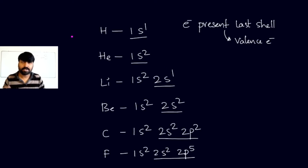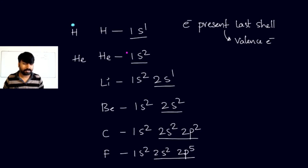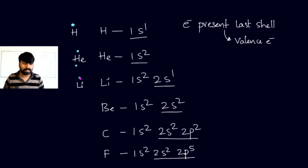For hydrogen, we represent one dot around the symbol because there is only one electron in its outermost shell. For helium, two dots are written. For lithium, only one dot is written — we consider only the 2s¹ electron, not the 1s² inner shell. For beryllium, two dots represent the two electrons in the outermost shell.